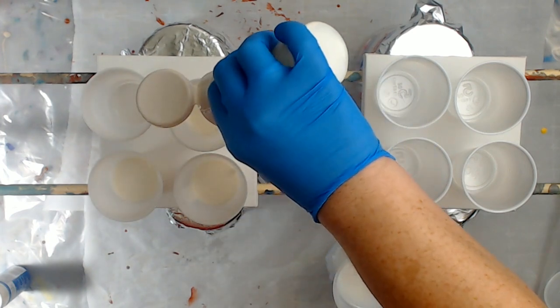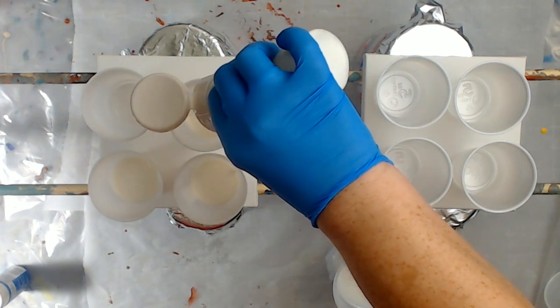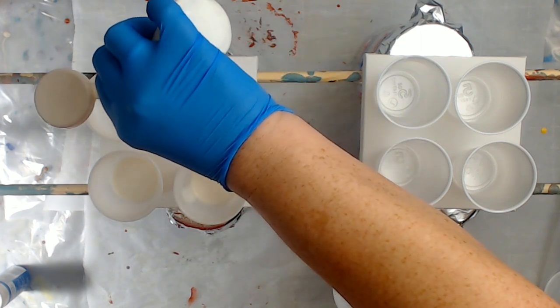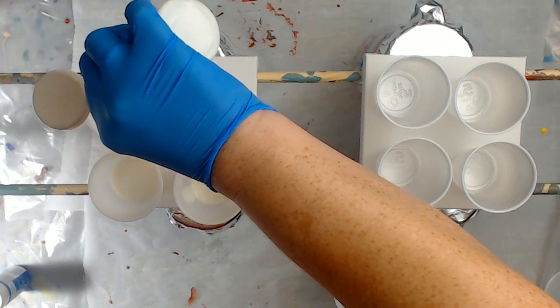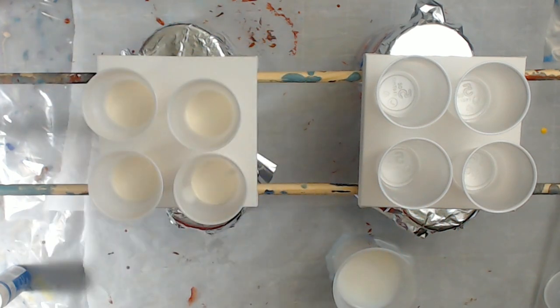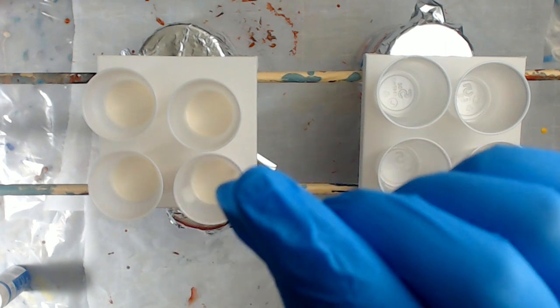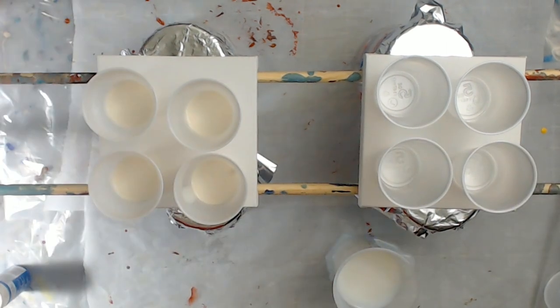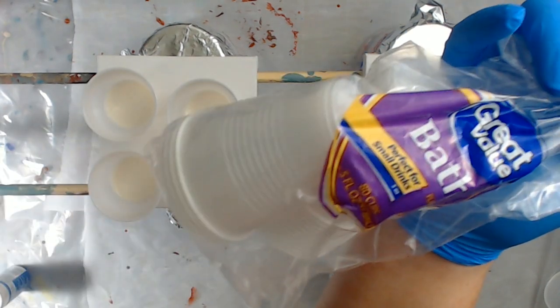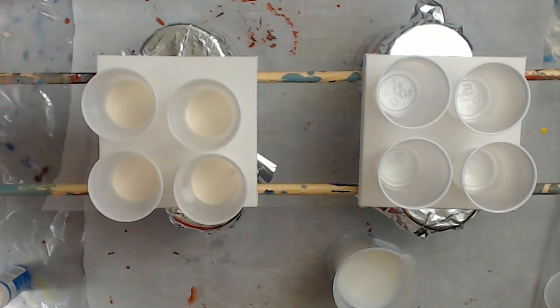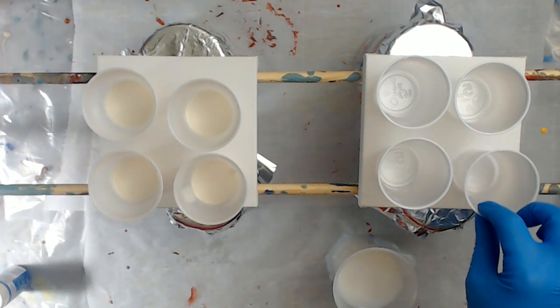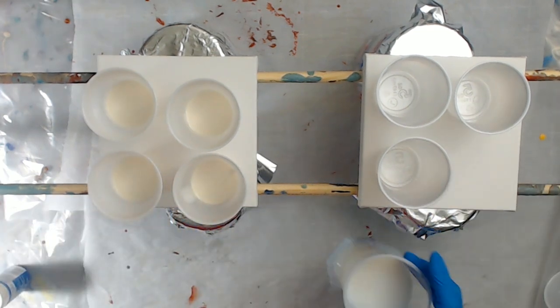I put about the same amount in each one, and that's more than half the bottle. So that's this much in this itty-bitty cup which is five ounces, just a very small amount of medium in there. Now I'm going to pour about the same amount of my Liquitex pouring medium into each cup.